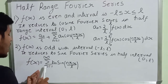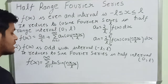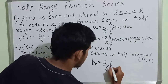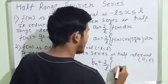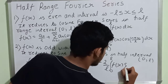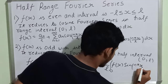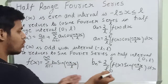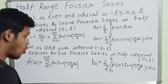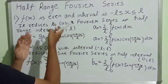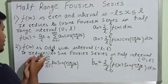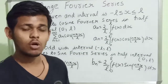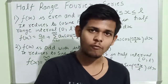Similarly, the sine Fourier series on the half-range interval 0 to l is: f(x) equals summation from n equals 1 to infinity of b_n sin(nπx/l), where b_n is determined accordingly. In this way we can determine the cosine Fourier series when the function is even and defined on the interval minus l to l, and the sine Fourier series when the function is odd on the interval minus l to l.